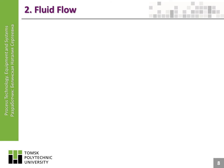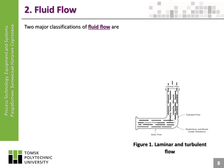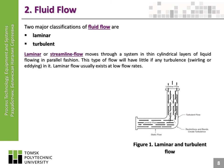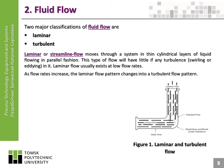Fluid flow. Two major classifications of fluid flow are laminar and turbulent. Laminar or streamline flow moves through a system in thin cylindrical layers of liquid flowing in parallel fashion. This type of flow will have little if any turbulence, swirling, or eddying in it. Laminar flow usually exists at low flow rates. As flow rates increase, the laminar flow pattern changes into a turbulent flow pattern.